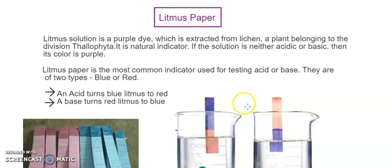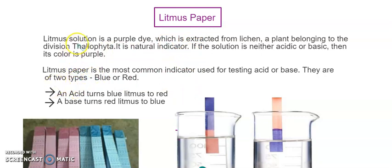Litmus paper, which I already mentioned when introducing acid and base, is actually made up of a natural indicator — it is not a chemical substance. Litmus solution is an extract from a plant belonging to the Thallophyta division, and this extract is changed into litmus paper. Litmus paper or litmus solution is a natural indicator. The litmus solution itself is purple in color.